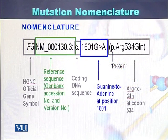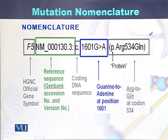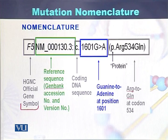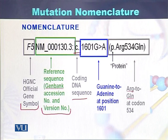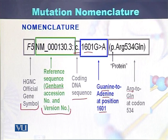When writing the nomenclature of a mutation, consider the following example: 'F5' represents the HGNC official gene symbol. 'NM_' followed by a number is the GenBank accession number, also called the version number. 'c.' denotes coding DNA sequence. '1601G>A' means guanine at position 1601 has been changed to adenine at position 1601.